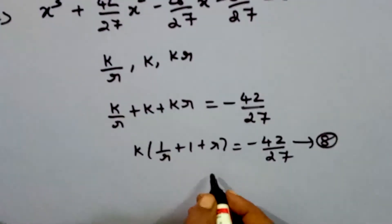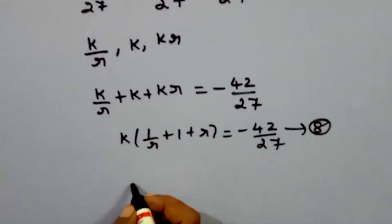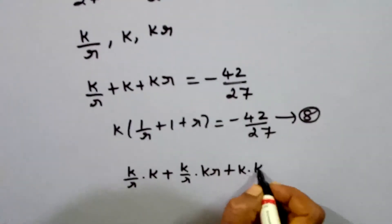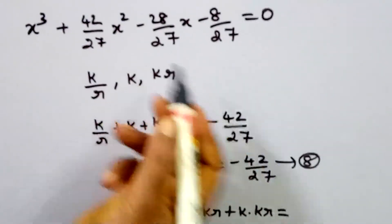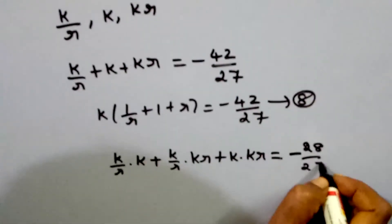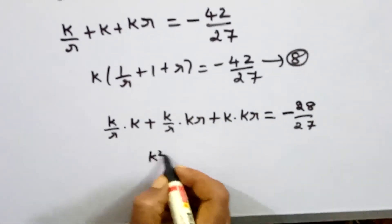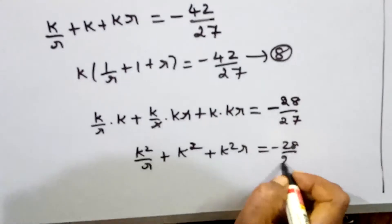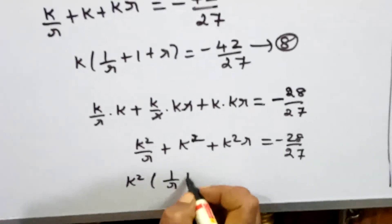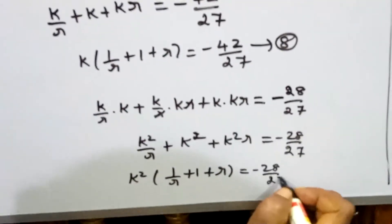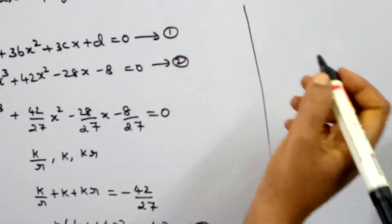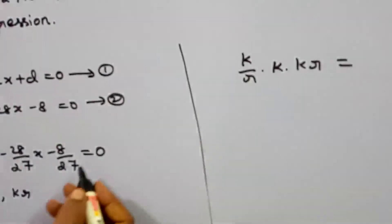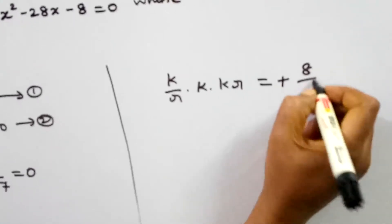The second relation — sum of roots taken two at a time: (k/r)·k + (k/r)·kr + k·kr = -28/27. Simplifying: k²/r + k² + k²r = -28/27, so k²(1/r + 1 + r) = -28/27, which is equation 9. The third relation — product of roots: (k/r)·k·kr = k³ = -(-8/27) = 8/27. So k³ = 8/27.